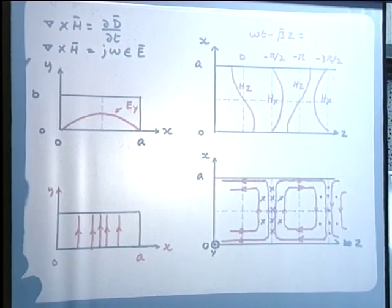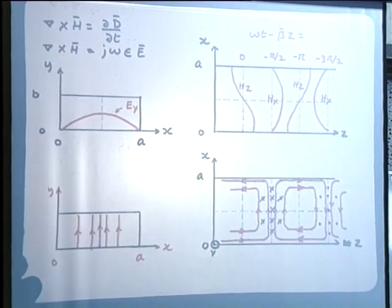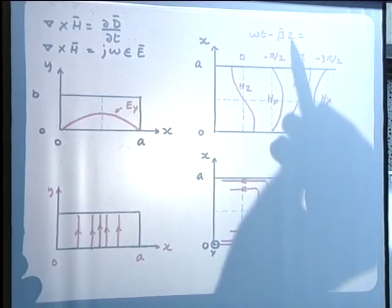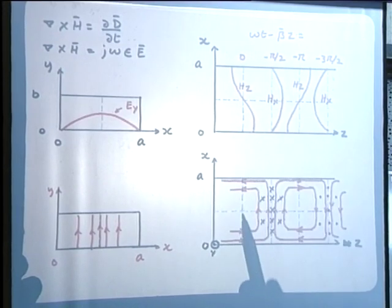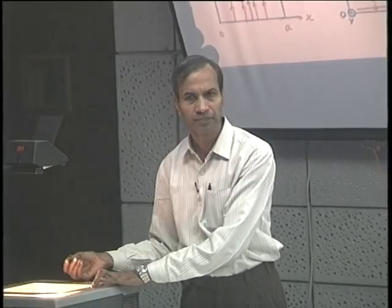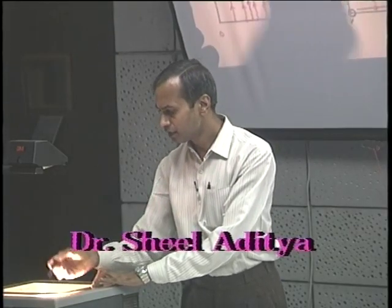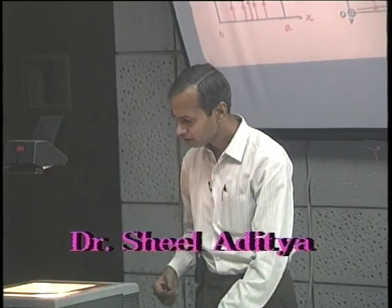If we consider the phasor form ∇×H = jωεE, the factor j represents a phase shift of 90 degrees. We find that if we change the argument by 90 degrees in time, the maximum value of the displacement current density will appear at these locations with a 90-degree phase difference from the magnetic field. Therefore, as expected, the field lines are quite consistent with respect to each other.